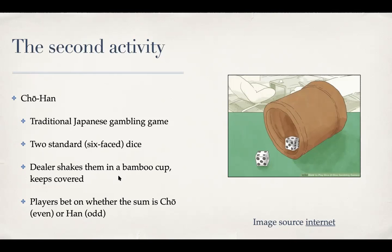We'll implement this as a single player game where the app is the dealer and the user is the player. The coins they have earned in the wallet activity will be passed on to the Chohan activity, where they can increment or decrement their wager amount, guess whether the sum will be even or odd, and then when they roll the dice, they'll see the result.